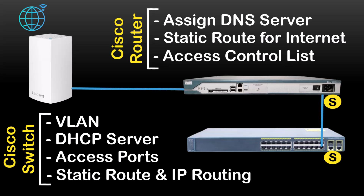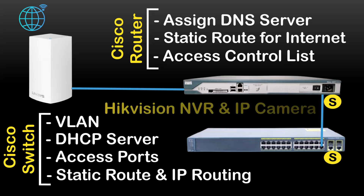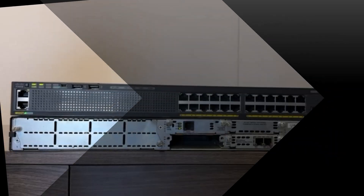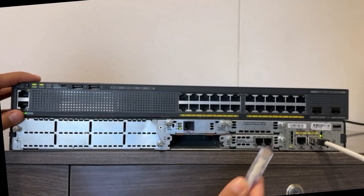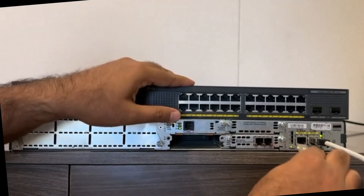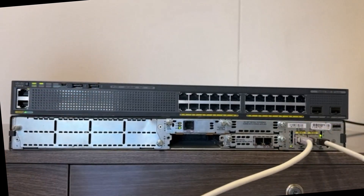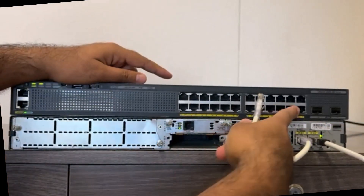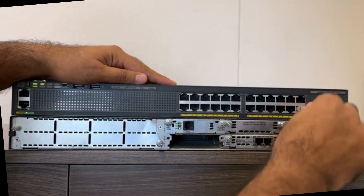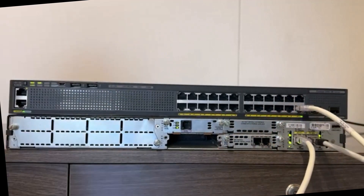And in my next video, I'll be adding and configuring a Hikvision NVR and Hikvision IP cameras to this network. So watch this video till the end, and don't forget to check out my next video. Now let's get started and do our physical activity first. I will connect one end of my network cable to the FastEthernet0/1 port on the backside of my Cisco router, and the second end to the GigabitEthernet1/0/24 port on my Cisco switch.